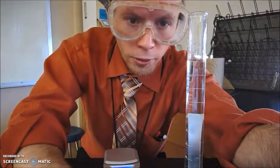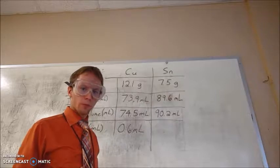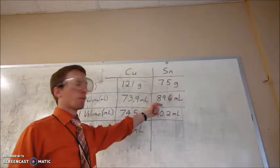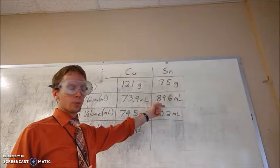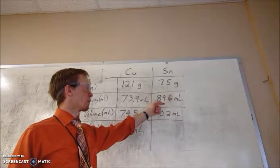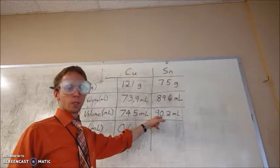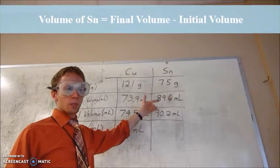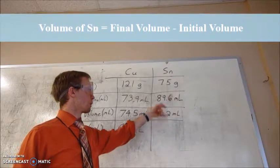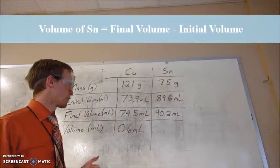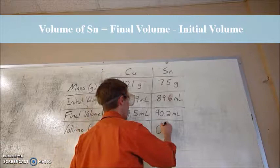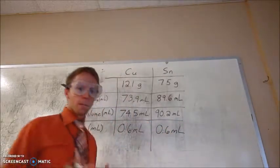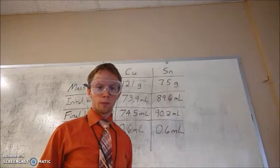Let's record all those values. We've recorded all the values. For the tin, we had our mass of 7.5 grams. Our volume before we put the tin in the graduated cylinder at 89.6 mL. The volume in the graduated cylinder after we put the tin in. So the difference between these two volumes is the volume of the tin. So 90.2 mL minus 89.6 mL will give us 0.6 mL again. And now you've completed one trial of the lab.